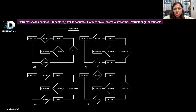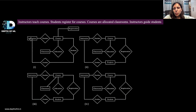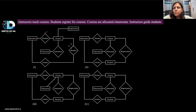Let's look at each option and see if it fits the description. In the first option, instructor teaches course — this is correct. But for student registers for course, the registration has been given as an entity, when it should be a relationship between the course and the student entity. Also, student should be an entity, not a relationship. So this option is incorrect.